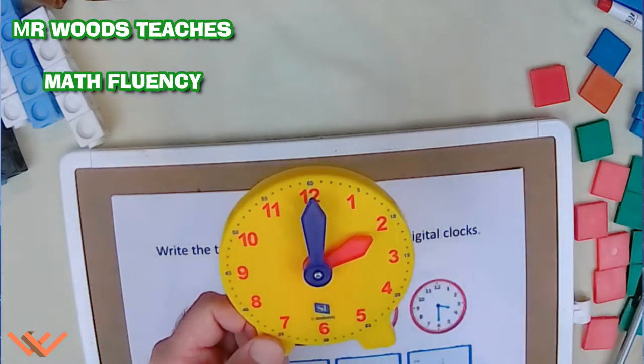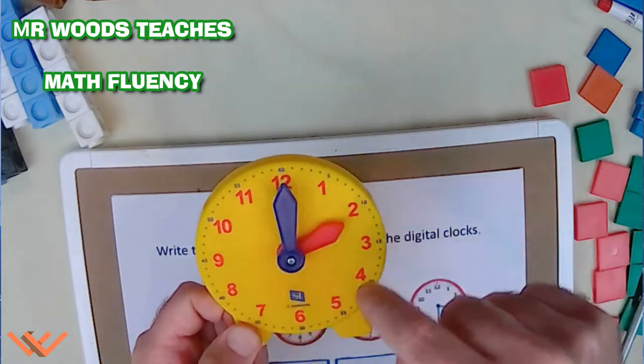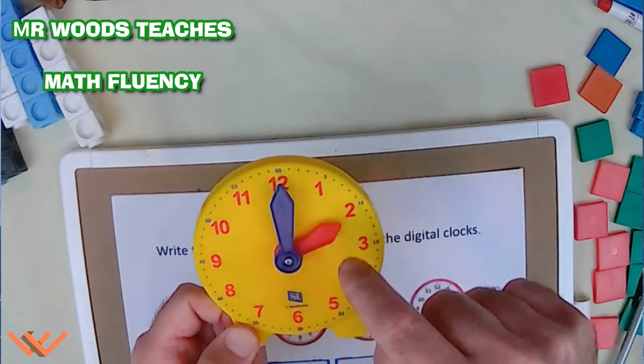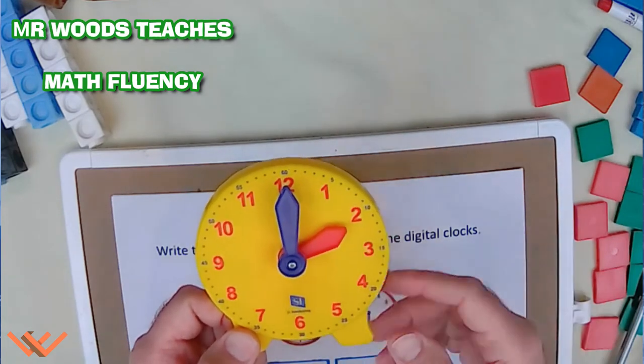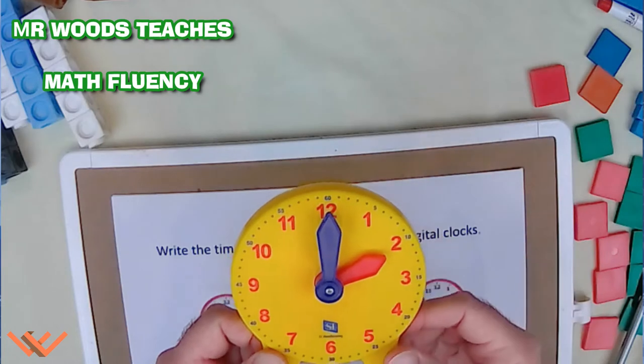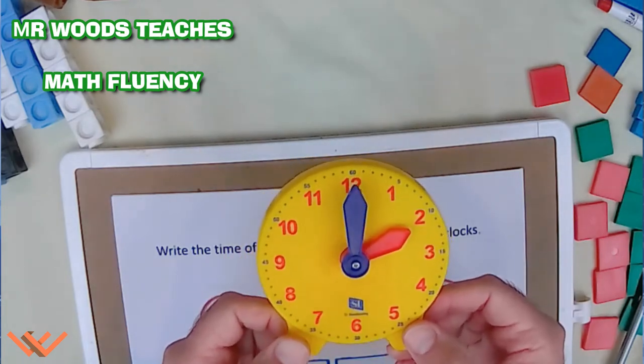So there's 60 minutes in 1 hour. And if there's a second hand here that was spinning around, there's 60 seconds in each minute.